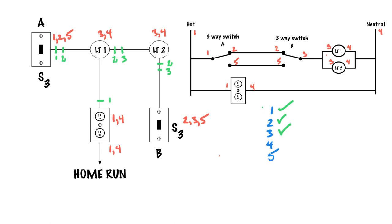Four: I have a four down at the receptacle and a four at light 1 and light 2. I don't have a four at switch A or switch B. So I take the four from the receptacle through to light 1 and light 2 — that's my neutral going all the way through. Check mark — four is done.